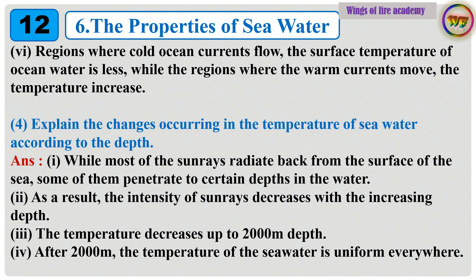Question 4: Explain the changes occurring in the temperature of seawater according to the depth. Answer: While most of the sunrays radiate back from the surface of the sea, some of them penetrate to certain depths in the water. As a result, the intensity of sunrays decreases with the increasing depth. The temperature decreases up to 2,000 m depth. After 2,000 m, the temperature of the seawater is uniform everywhere.